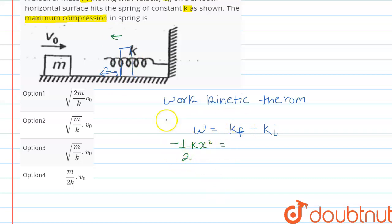This equals to final kinetic energy will be zero, because the velocity will be zero, minus initial kinetic energy is half m v naught squared.